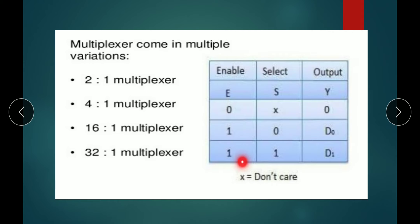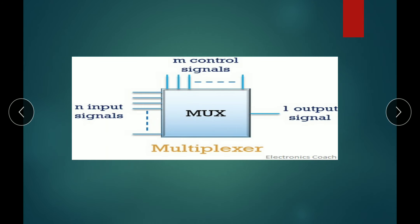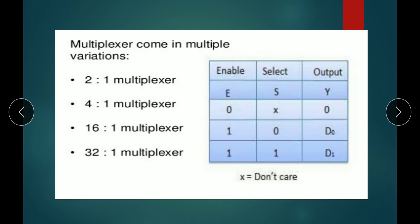When the enable is 1, there are two inputs with select values 0 and 1. The output is D0 when the first line is connected to the output, and D1 when the second line is connected to the output. This is the truth table for the 2-to-1 MUX.